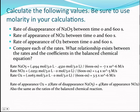The rate of N₂O₅ is negative because it's a reactant that's being consumed, while NO₂ and O₂ are positive because they're products being formed. The relationship between the rates is the same as the balanced chemical equation, just like the mole ratios.